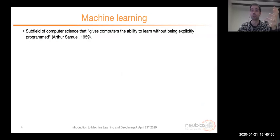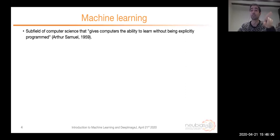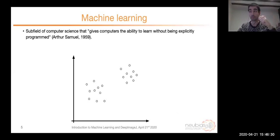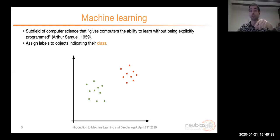This is nothing new — it was already defined in 1959 by Arthur Samuel, who said that machine learning is the subfield of computer science that gives computers the ability to learn without being explicitly programmed to do so. In practice, we have data points — samples — and we want machine learning to tell us which class each one belongs to. For example, if we have an experiment with wild-type cells and mutant cells, the purpose of machine learning is to assign labels to the objects indicating their class.